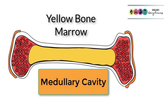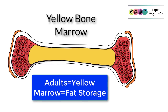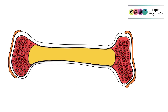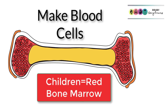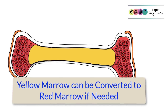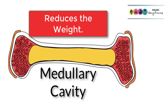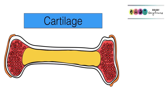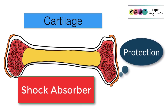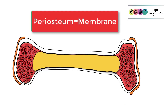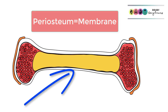Inside a bone you would see a cavity running through the diaphysis known as the medullary cavity, filled with a fatty substance — yellow bone marrow in adults — as a way of storing excess fat. In children it would be filled with red bone marrow, which makes blood cells. If adults ever need to make more blood cells, yellow marrow can be converted back into red bone marrow. This cavity also reduces the weight of the bone. At the ends of the bones is a layer of cartilage to act as a shock absorber and allow friction-free movement. Covering the rest of the bone surface is a membrane known as the periosteum, which contains bone-building cells called osteoblasts and also many nerve cells.